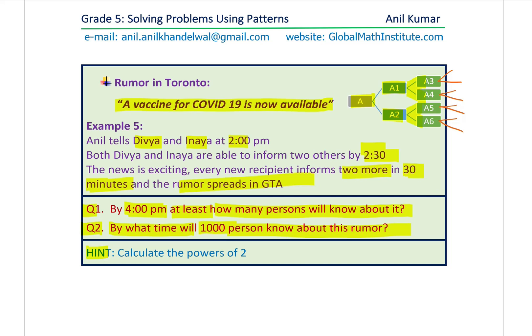Here's a hint for you: calculate the powers of two. Powers of two means 2, 2 times 2 is 4, 4 times 2 is 8, 8 times 2 is 16, then 32, and so on. These numbers will definitely help you to solve this particular question.